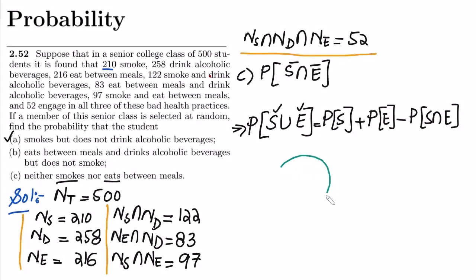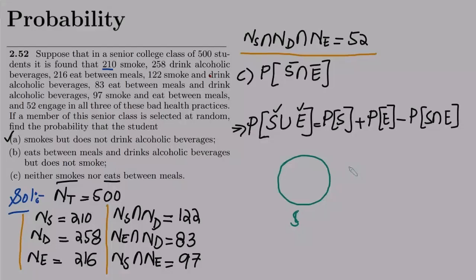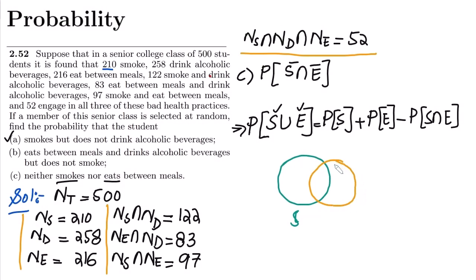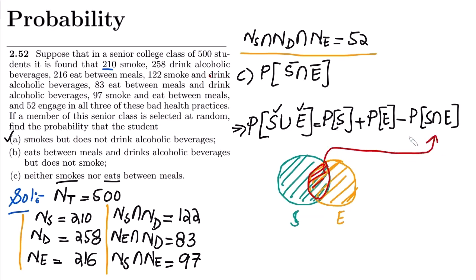Let me show you with this diagram. If I have S and E represented as two overlapping regions, when I add them together, the common area — the intersection — gets included twice. So in order to find the union, I have to subtract that common area once.